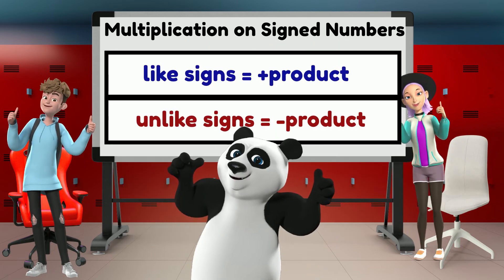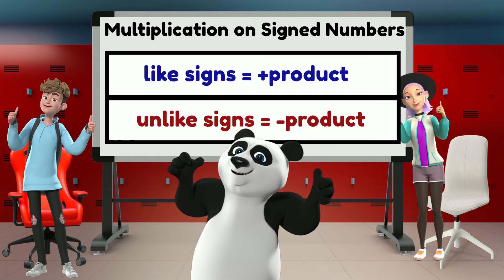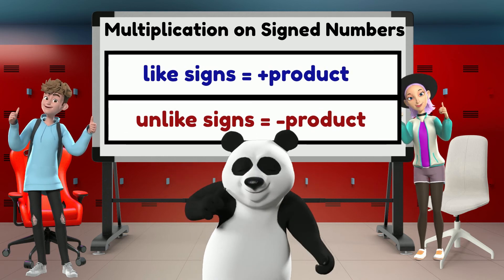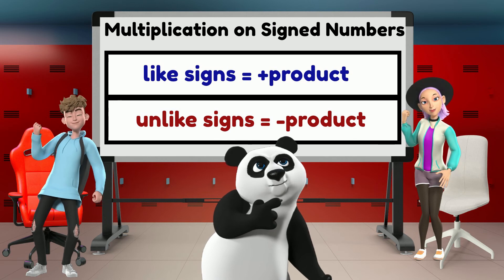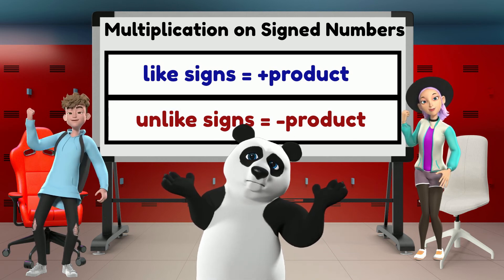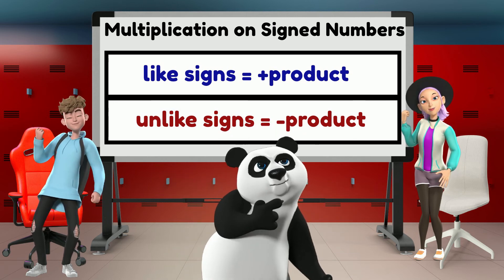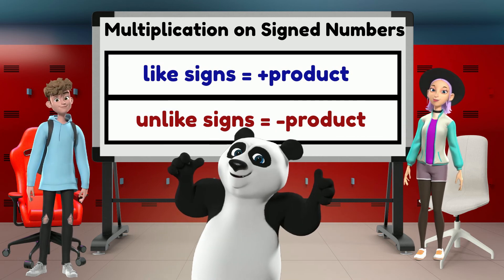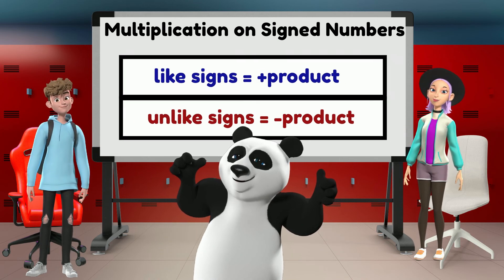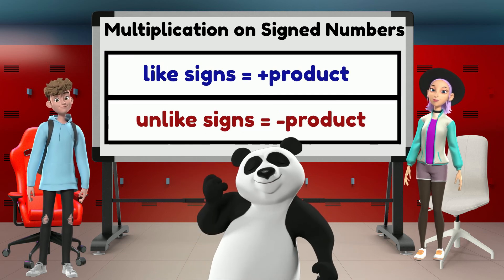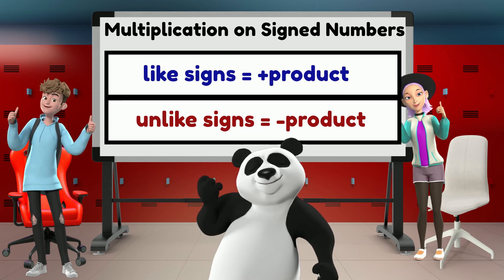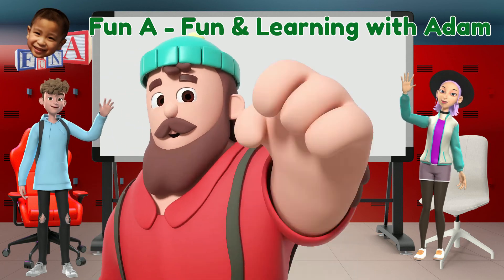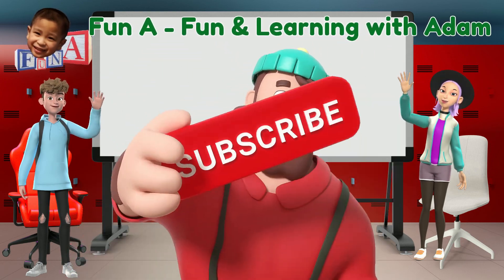Remembering the rules is key: like signs, positive product; unlike signs, negative product. If we need to multiply more than two numbers, simply multiply two numbers at a time, apply the multiplication rules and the order of operations if the expression calls for it, until you finish multiplying all the given numbers. That's it for now. We hope you learned something from today's lesson. Next time, we'll do division.